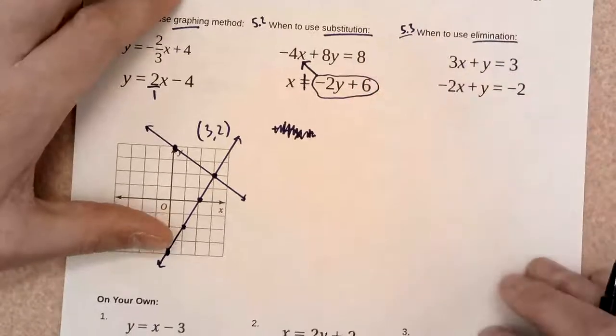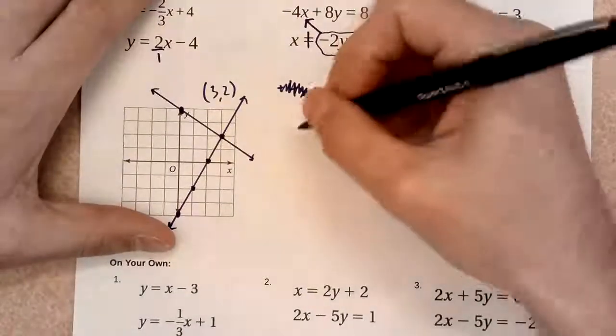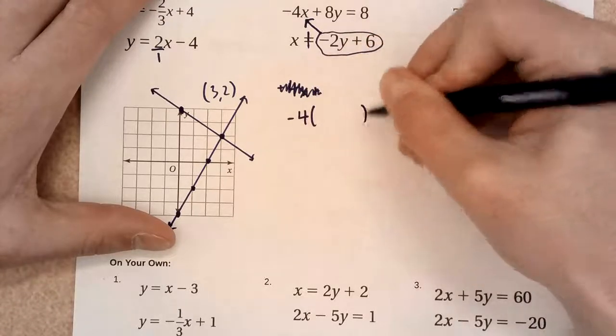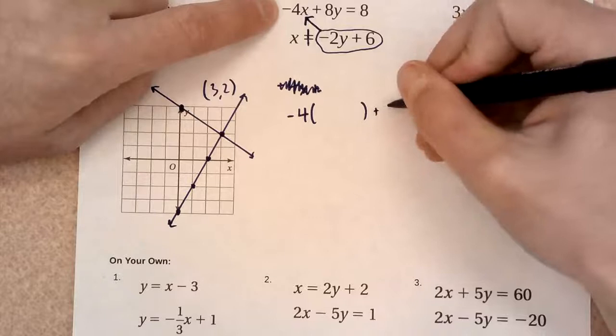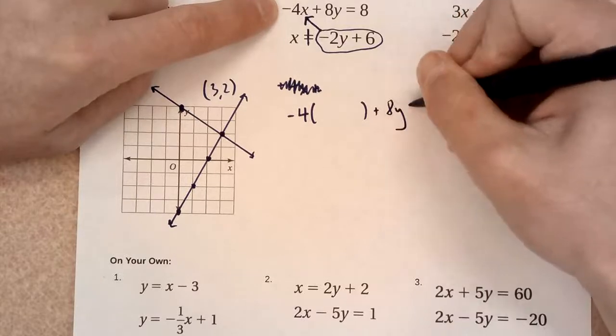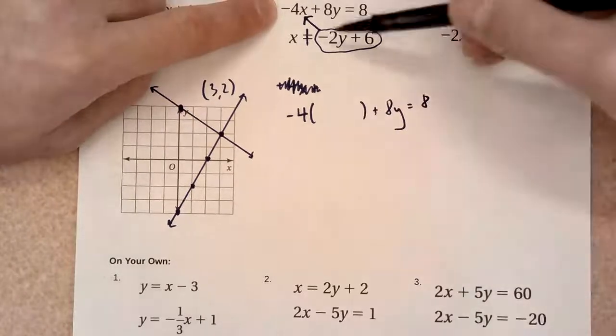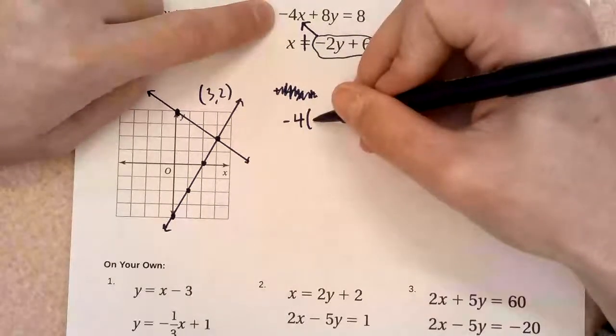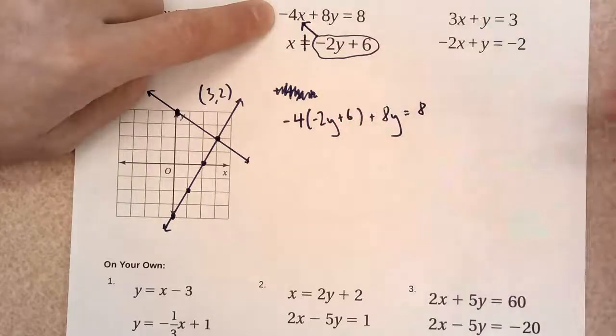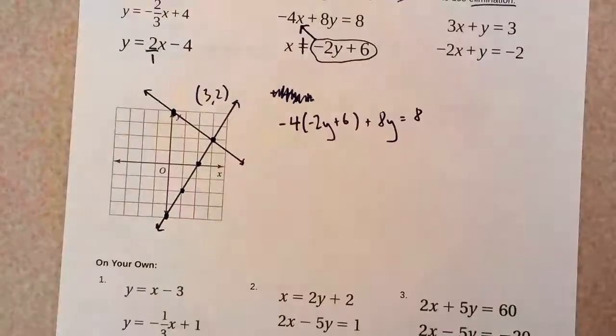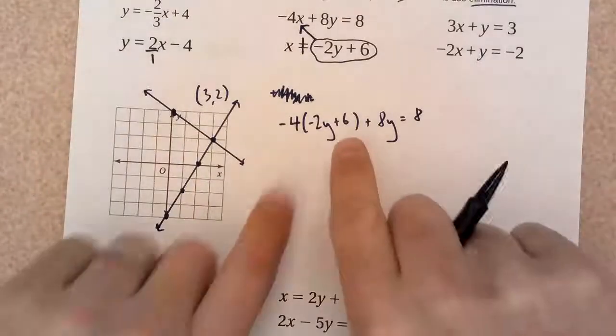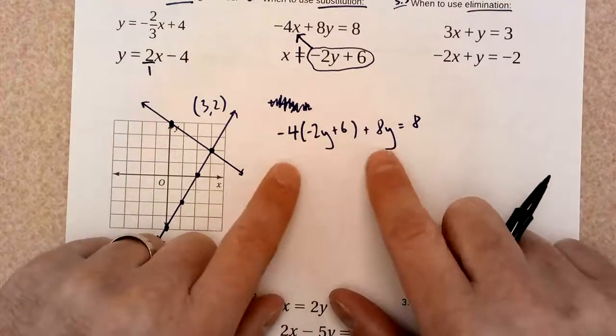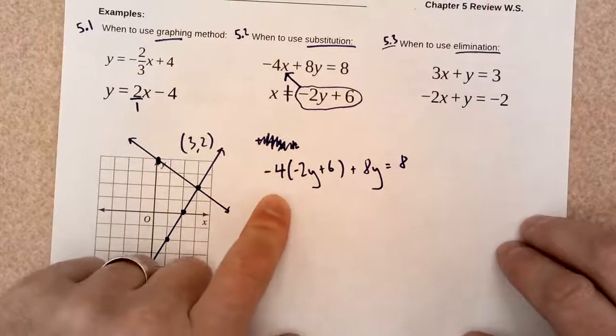I'm going to have to scribble that out. Negative 4x, I'm leaving a big blank spot. Plus 8y equals 8. And that's because instead of x, I need this new expression for x. Negative 2y plus 6. All right. My next video, I'll finish solving this one. But that is substitution.